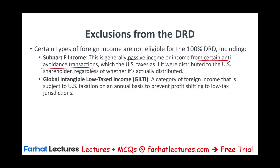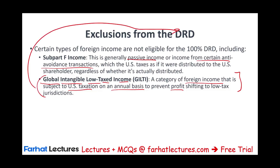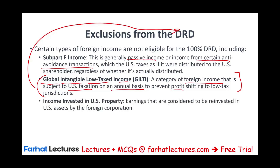If you are subject to the global intangible low-taxed income, or GILTI, this is a category of foreign income that's subject to U.S. taxation on an annual basis to prevent shifting profit to low-tax jurisdictions. Just know that GILTI is not subject to the DRD — there's a whole recording about this. Also, earnings that are considered to be reinvested in U.S. assets by foreign corporations — simply put, income reinvested in U.S. property — you cannot take the DRD for those either.